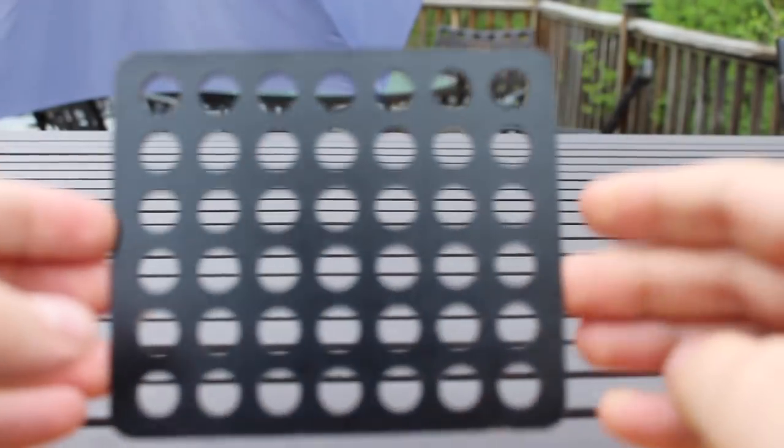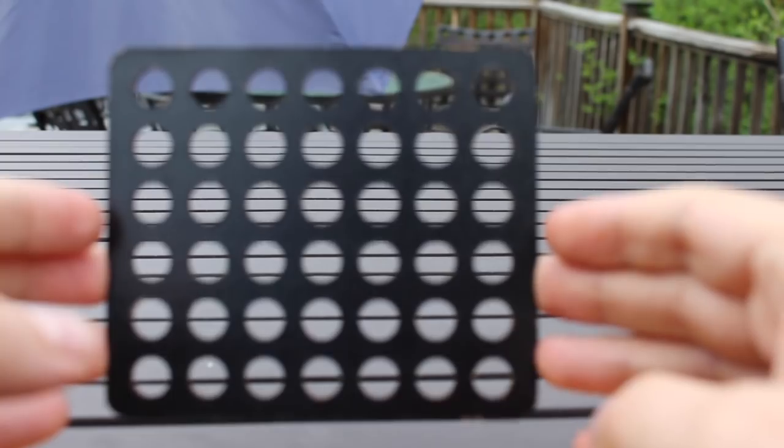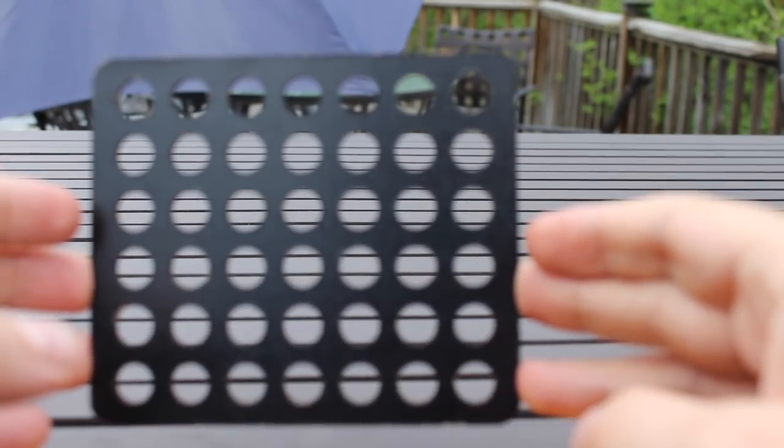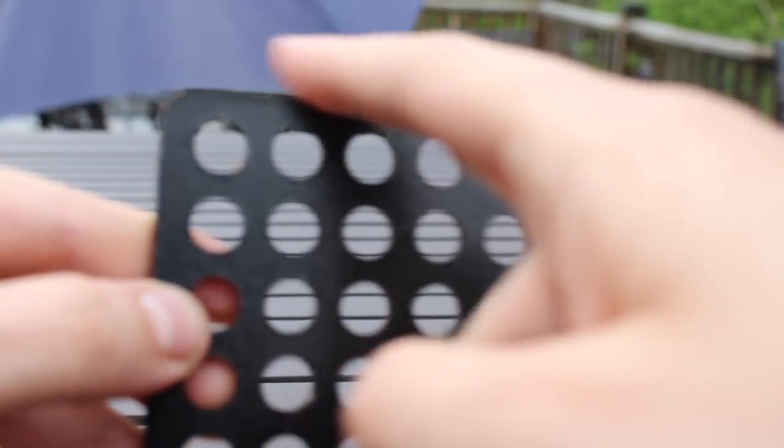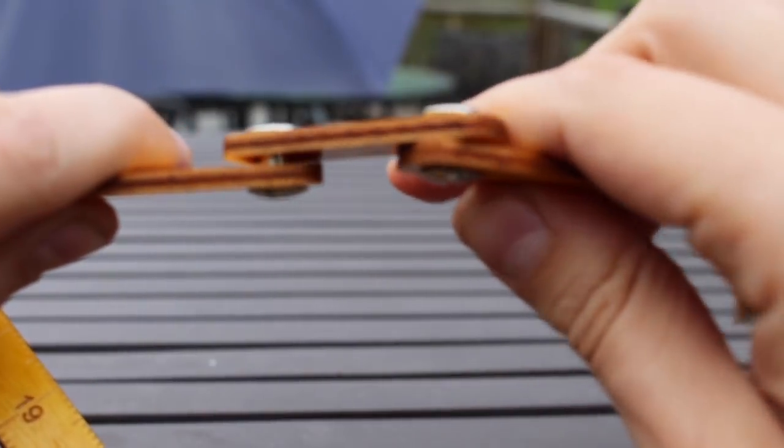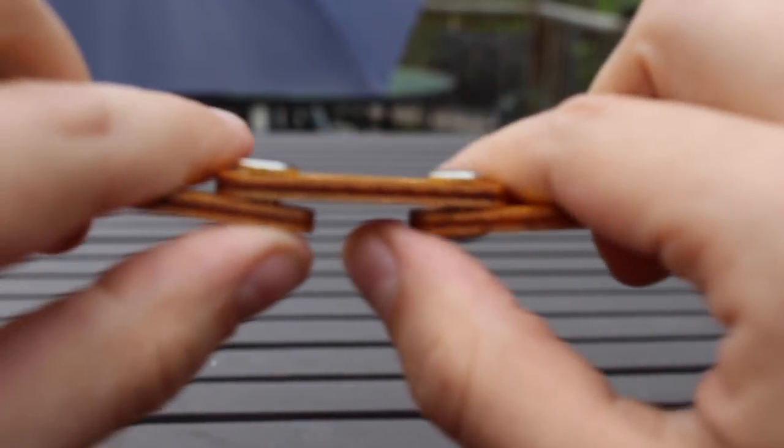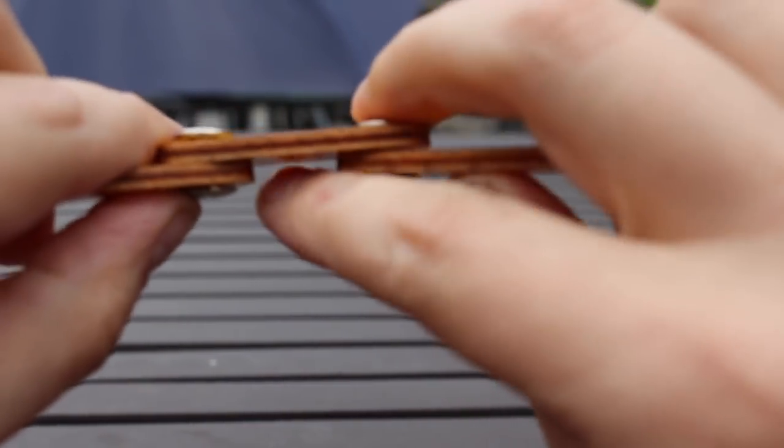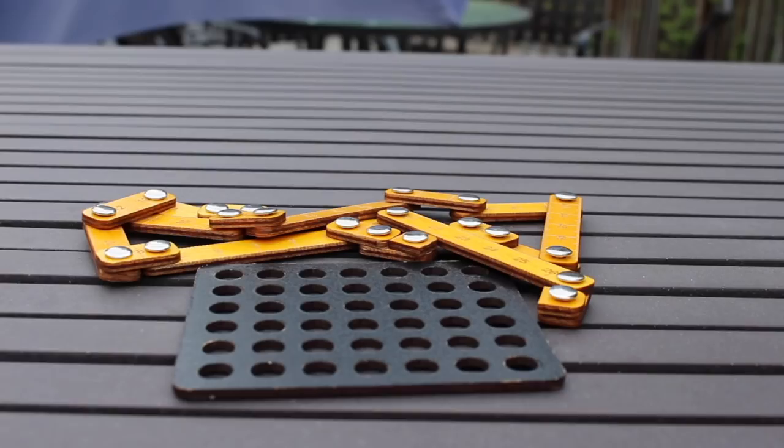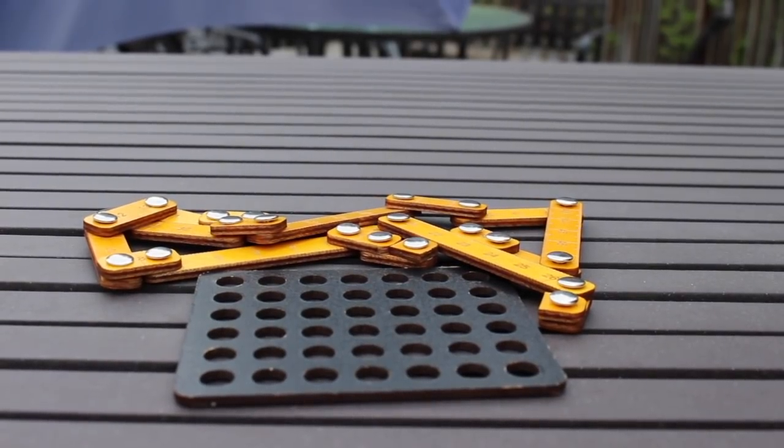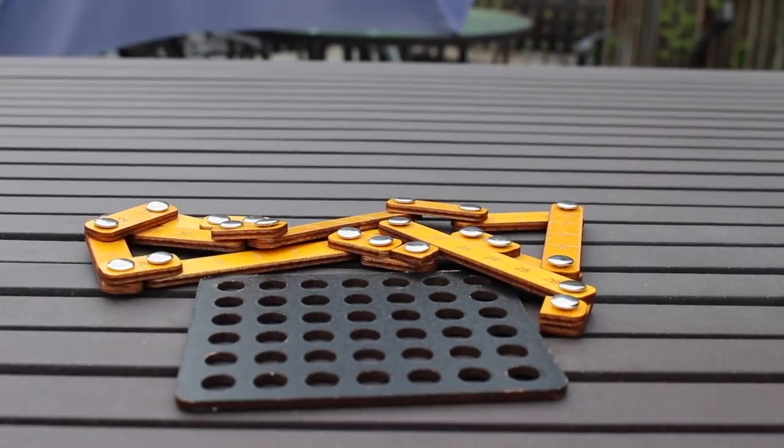And then finally, there's this grid, and the object is to fit these two pieces into this grid so that no piece is outside of it. One thing that really helps you is the fact that there are two levels, so that you can fit pieces underneath. I can't say much more without spoiling the solution to the puzzle, so let's get started.